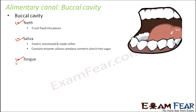Saliva gets mixed with food, moistening and softening it. Saliva also contains a digestive enzyme called salivary amylase, which converts starch into sugar. Starch is a complex carbohydrate — a polysaccharide made of many simple sugars joined together — while sugar is the simplest form of carbohydrate. So salivary amylase breaks down complex carbohydrates into simpler ones, beginning the chemical digestion of food.